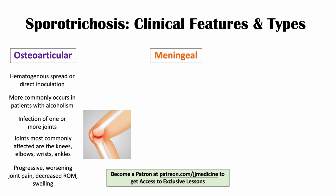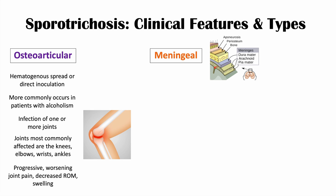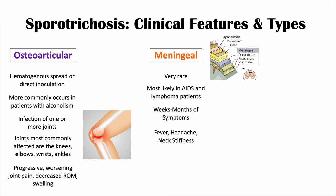Meningeal sporotrichosis is another subtype, where the meninges — the layers covering the brain, including the dura mater, arachnoid mater, and pia mater — become infected. This subtype is very rare and more likely to occur in patients with compromised immune systems, such as AIDS and lymphoma patients. The symptoms can be chronic, lasting weeks to months, and include fever, headache, and neck stiffness.